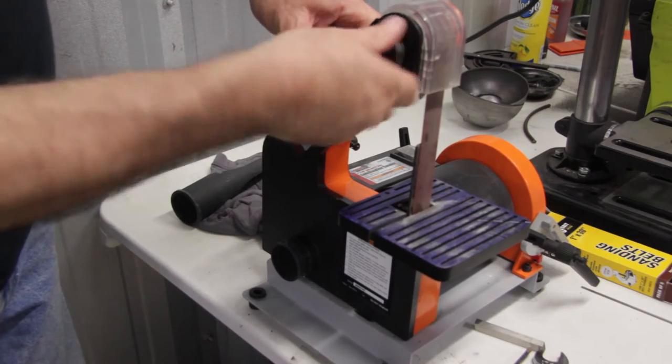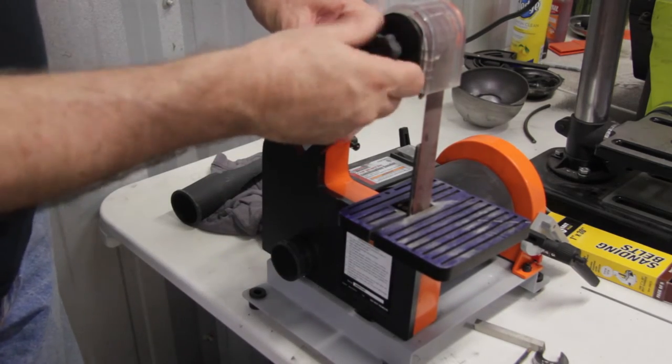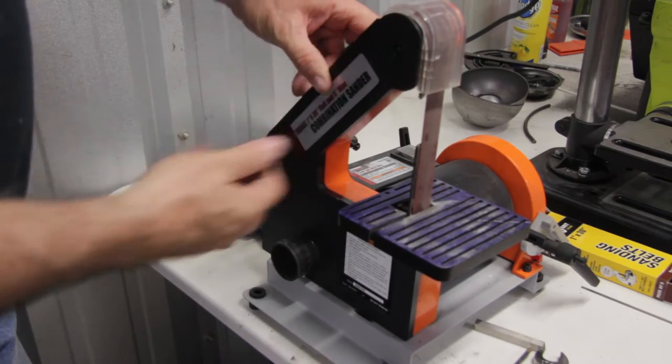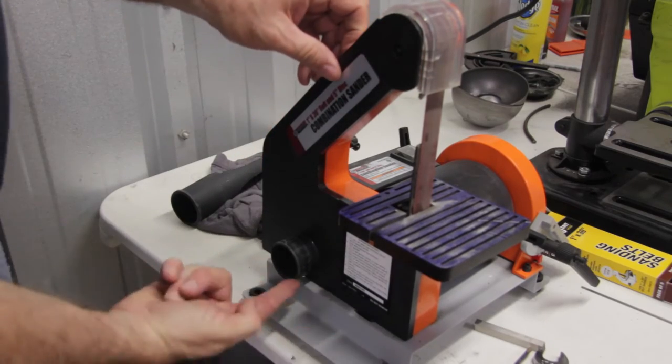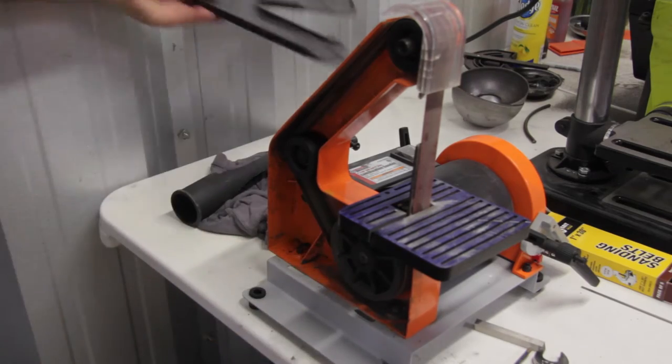There's a thumb screw up at the top. You loosen that thumb screw which will loosen the cover plate so you can get at the tensioner and the belt. And there's two pins at the very bottom. So you just tilt the cover down, pop that off.